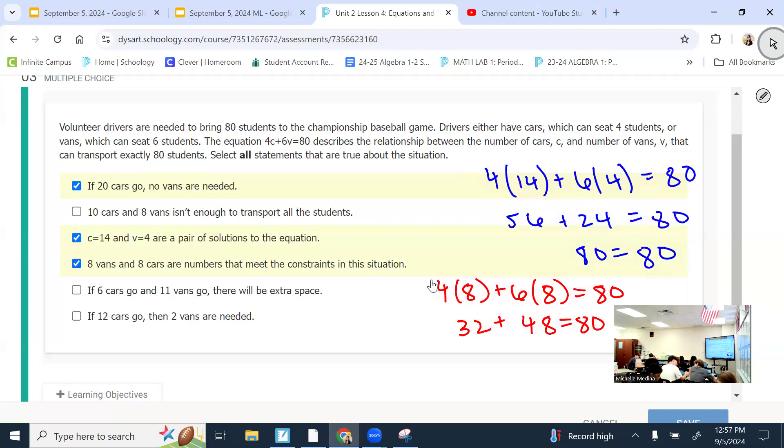If 6 cars go and 11 vans go, there will be extra space. So, we're seeing if we have an excess of seats. That would be extra space. 6 times 4 is 24. 6 times 11 is 66. When I add those together, what do I get? 90. And that would be extra seats. So, I will pick that one. It's not a solution to the equation, but it does give me more than enough seats. So, that is true for this situation.